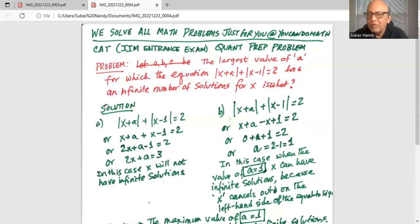Because one possible value of |x-1| inside can be -(x-1), or -x+1. So in this case, we have x+a-x+1. The x is cancelled. So we have a+1=2, or a=2-1=1.